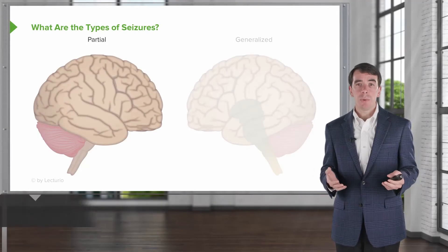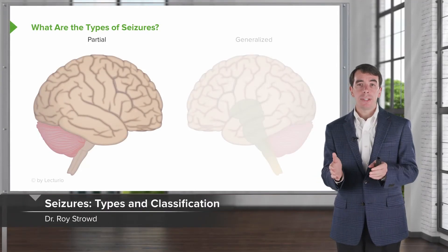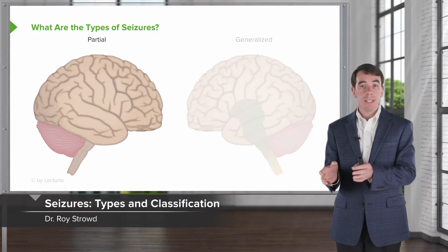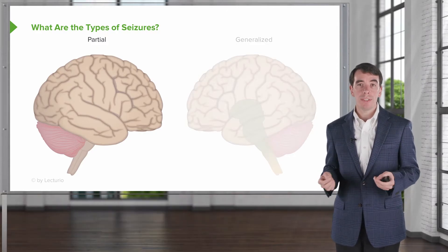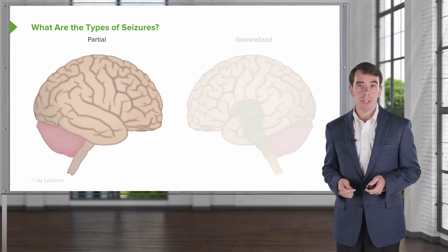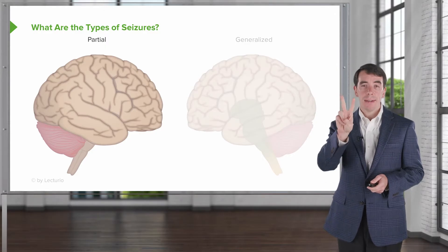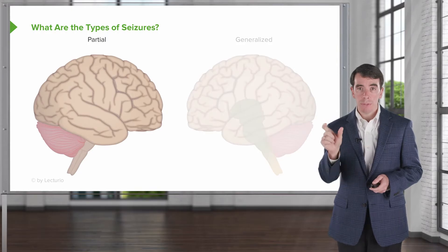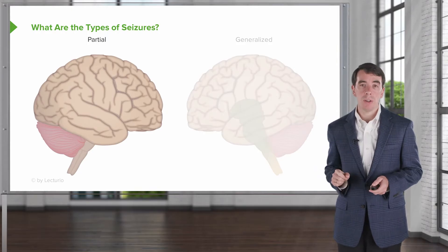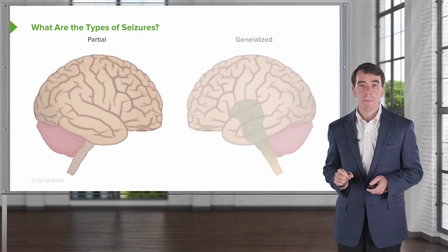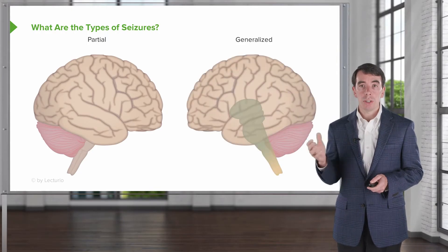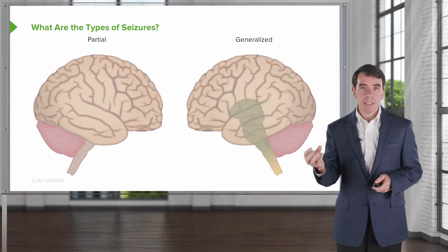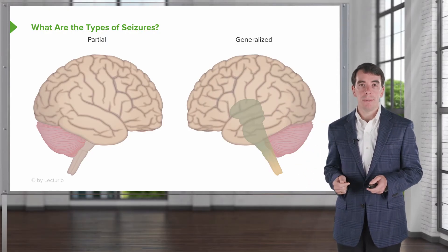What are the types of seizures? Once we make the diagnosis and determine that the spell is indeed a seizure, our first step is to figure out what type of seizure it is. In general, we categorize seizures in two ways: as either partial in onset, coming from a specific area out in the cortex, or generalized in onset, coming from a deep focus inside the brain.